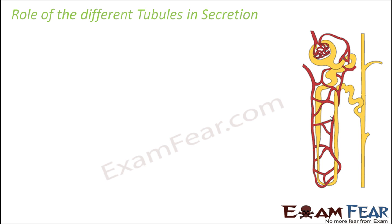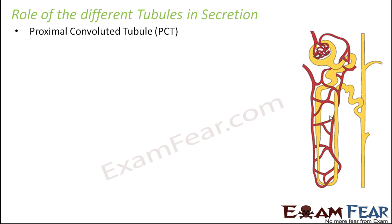Now let us look at the role of the different tubules in the process of secretion, like how we saw that different tubules participate in the process of reabsorption. Similarly, different tubules also participate in secretion. Starting with the proximal convoluted tubule or PCT — it selectively secretes ions like hydrogen ions, ammonia, as well as potassium ions.